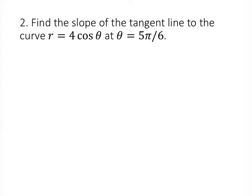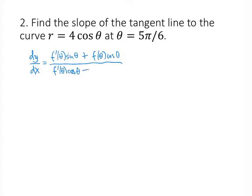Very similar problem — we're going to do it in pretty much the same way. Again, we want to find the slope of a tangent line to a polar curve at a given point. The formula we're going to use is dy/dx equals f prime of theta times sine of theta plus f of theta cosine of theta, all divided by f prime of theta cosine of theta minus f of theta sine of theta.